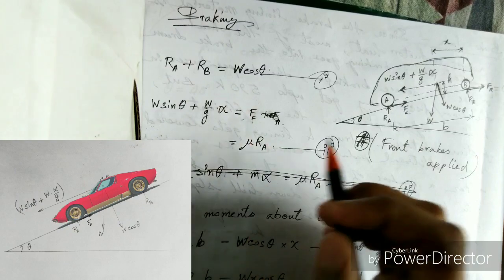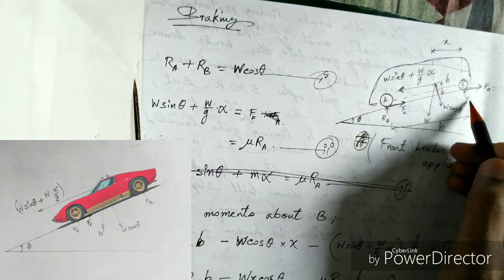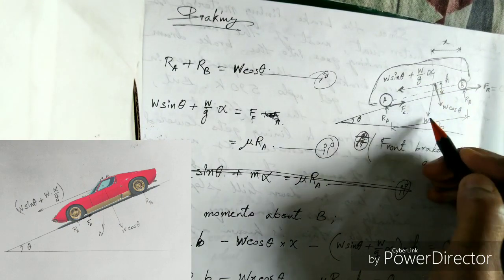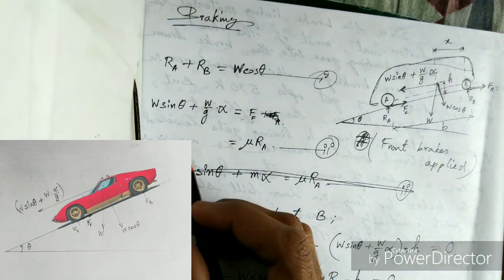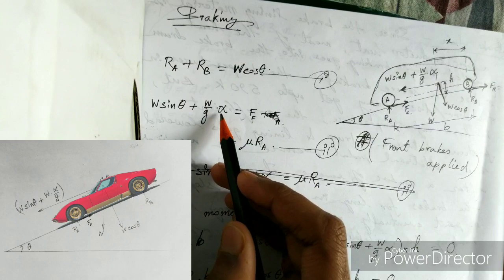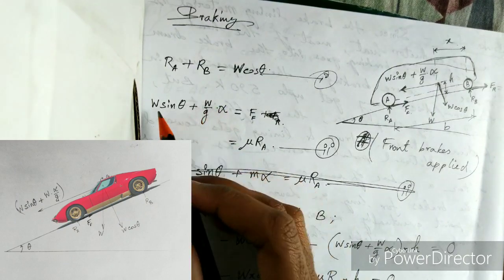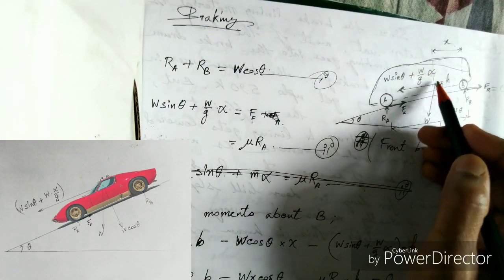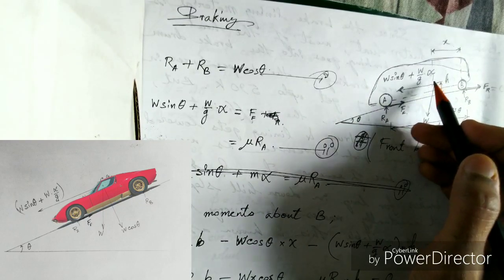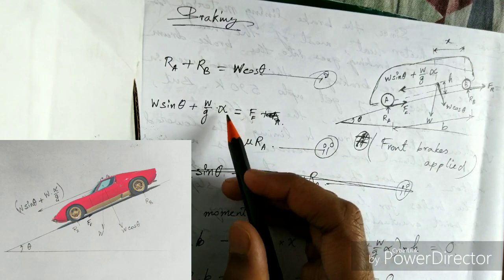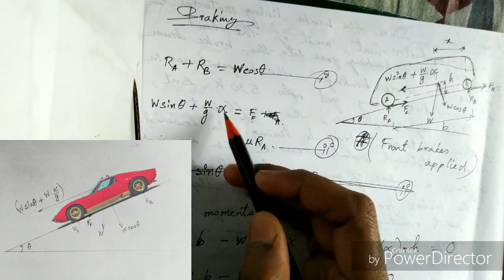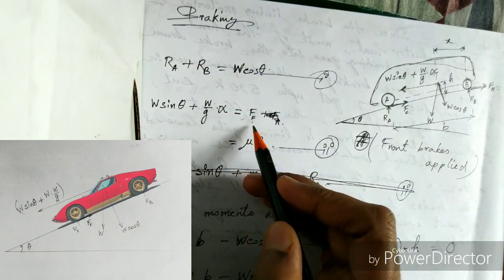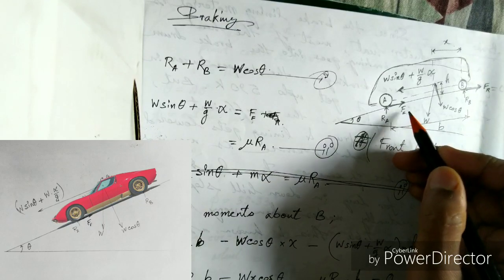The reaction force on the front tire and the reaction force on the rear tire are balanced by W cos theta, which is the normal component of the weight W. Then we have W sin theta plus W/G into alpha — this is the inertia force, and this is the parallel component of weight W. Alpha is the retardation; in many cases alpha is also written as F/G. This whole summation equals FF, because FF is the only force resisting.